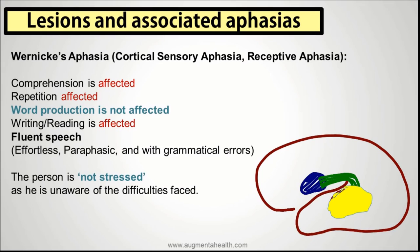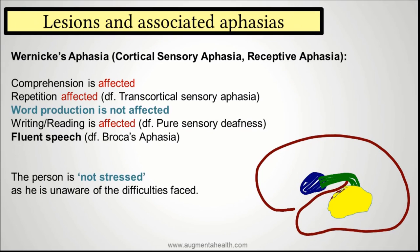The crucial differences that help answer MCQs: in transcortical sensory aphasia repetition is not affected, whereas in Wernicke's aphasia repetition is affected. Writing and reading are affected in Wernicke's aphasia, whereas in pure sensory dumbness they are not affected.